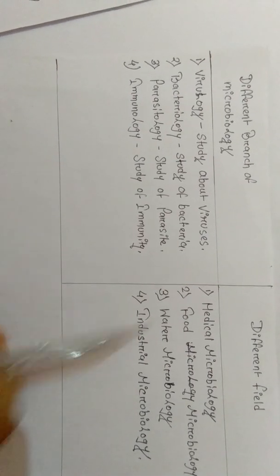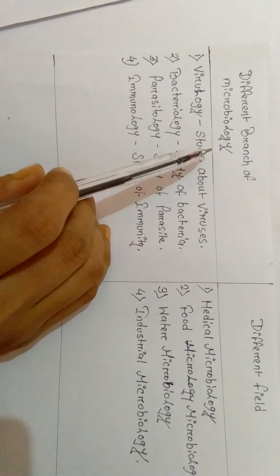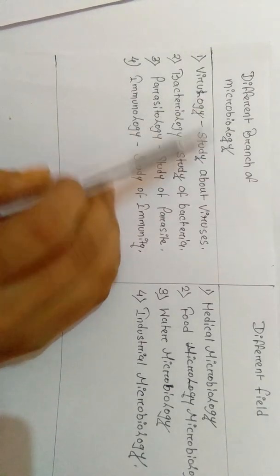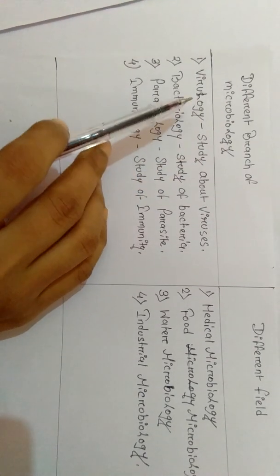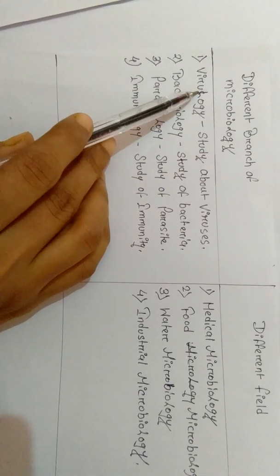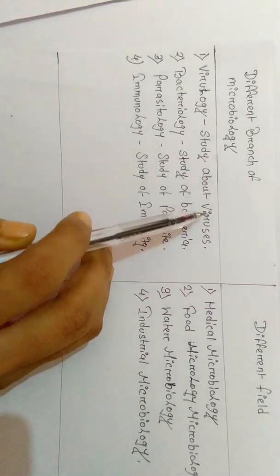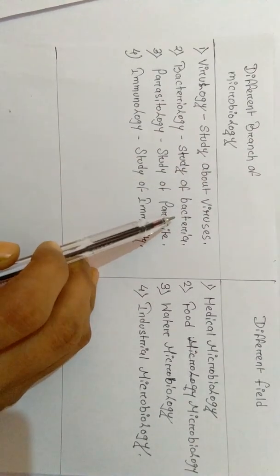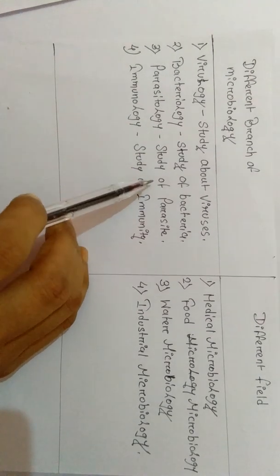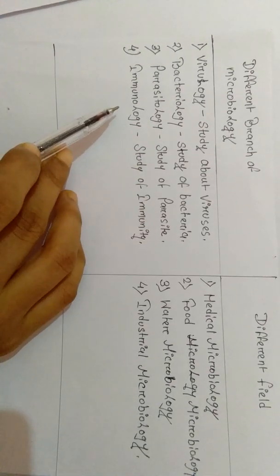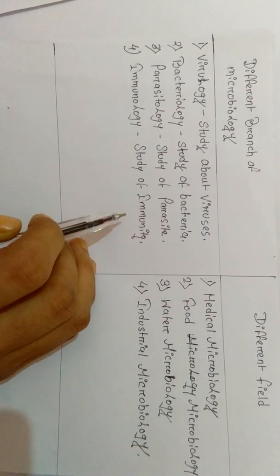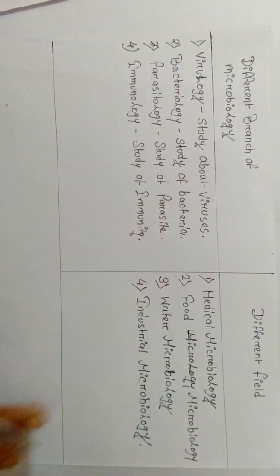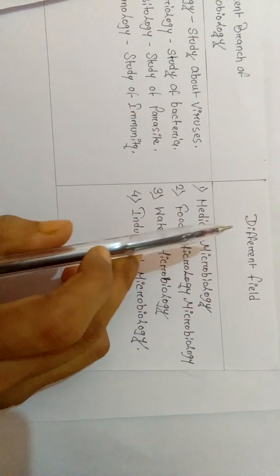Different branch in microbiology, means different study under microbiology. The first point is virology - study about viruses. Bacteriology - study of bacteria. Parasitology - study of parasite. Immunology - study of immunity. You can add this different field means knowledge of microbiology, where we can apply the knowledge of microbiology, in what fields we can apply.